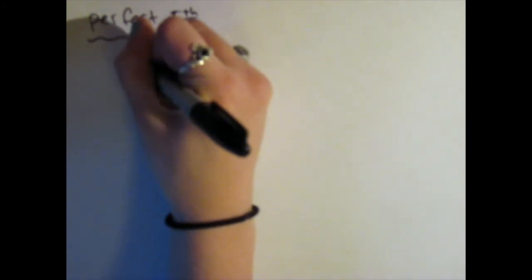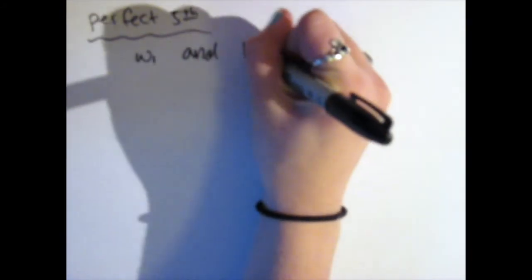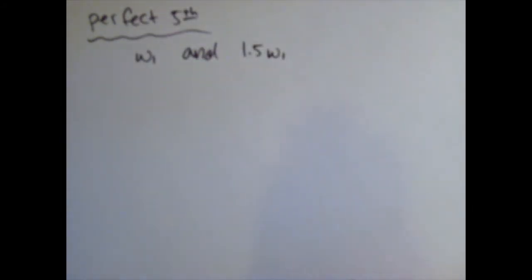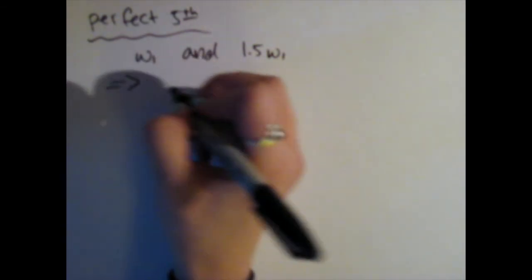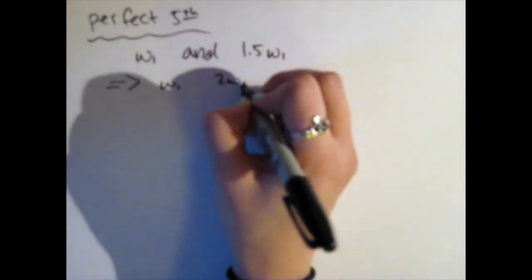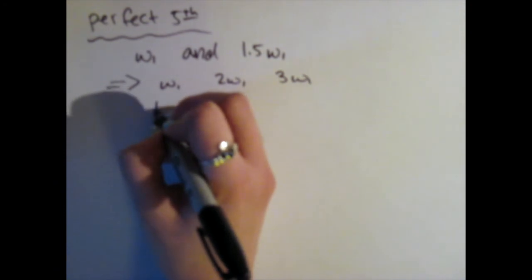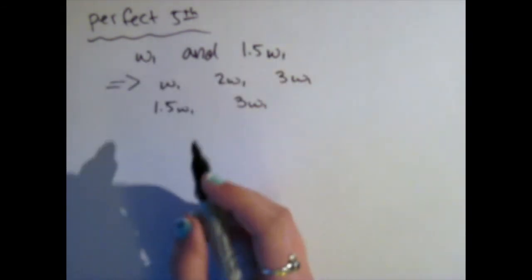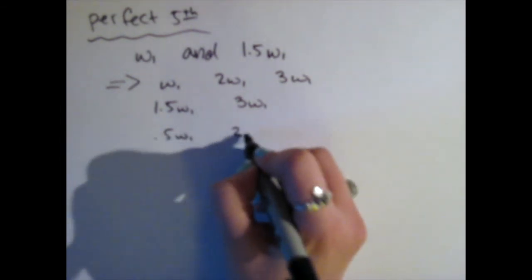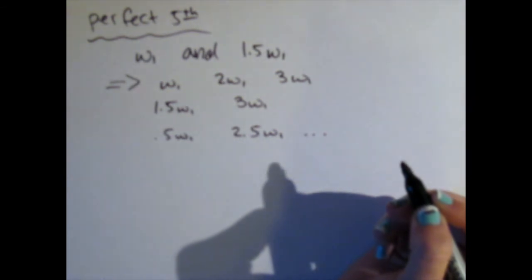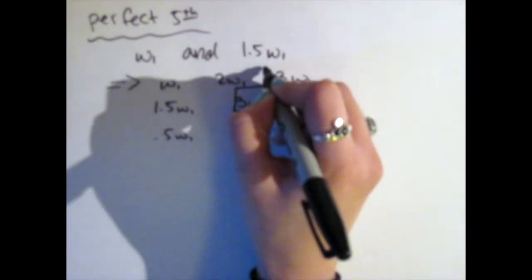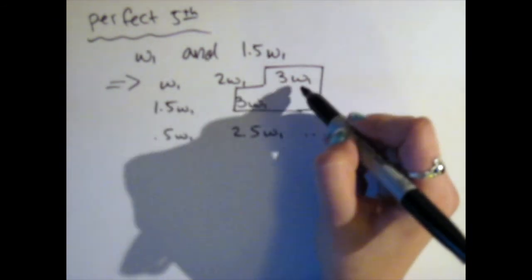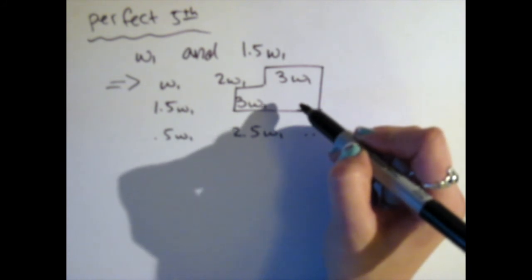Now, our two inputs in this case are a perfect fifth apart, which corresponds to inputs of omega 1 and 1.5 omega 1, which if you remember all of the harmonics that we just looked at, we get combinations like this. The piece that's really interesting is there is more than one way to make a 3 omega 1, and that is the overtone that we are looking for in the following experiment.